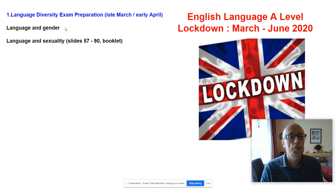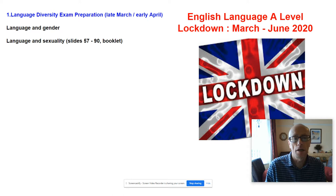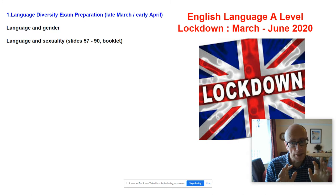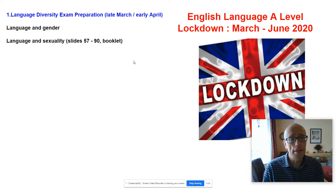We were looking at concepts like semantic derogation, we were looking at gender-free pronouns, and we were asking the question: to what extent does the English language have a problem in terms of gender bias? We also did a little bit about language and sexuality as well. In particular, we looked at Polari, about which there's quite a lot in the textbook on page 185 to 186.